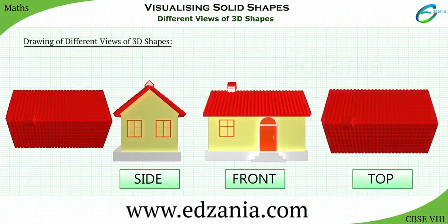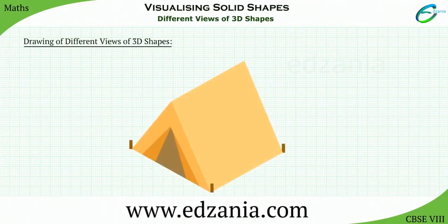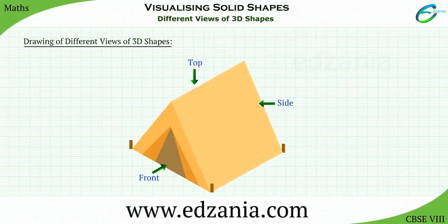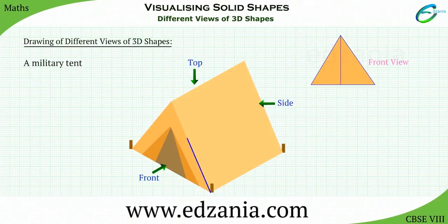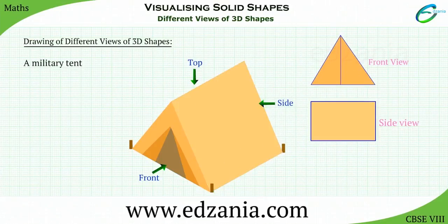Now you're familiar with identifying the different views like the front, side, and top views of 3D objects. Now let us learn how to draw different views of 3D objects. Here we have a military tent. Let us draw the views of the tent. Observe the drawing of the front view, the side view, and the top view.